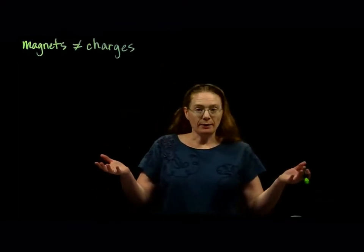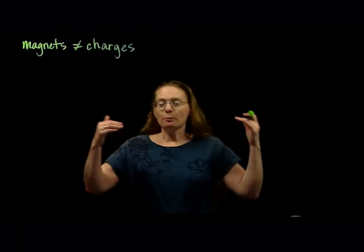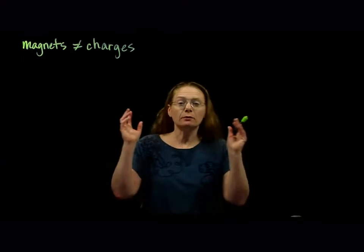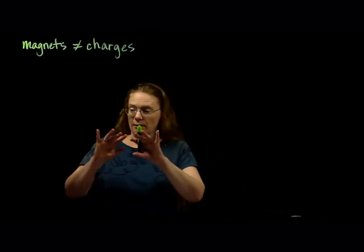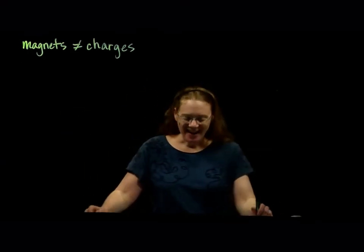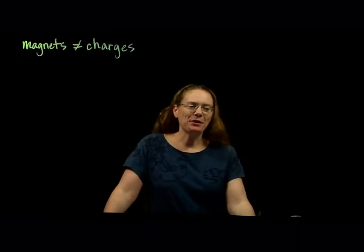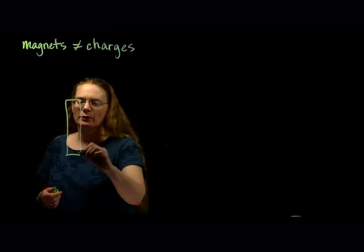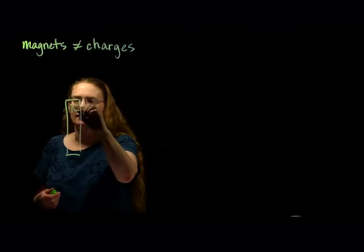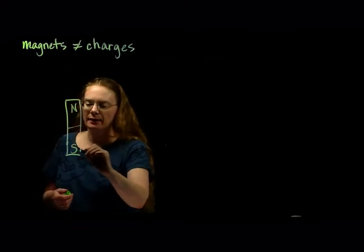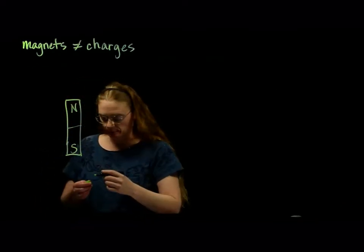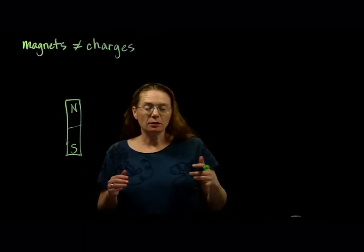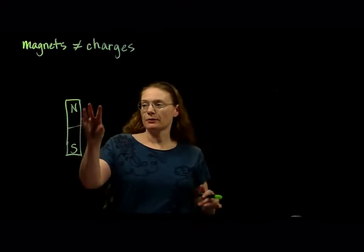You know that magnets have a north and a south pole. North and north will repel, north and south will attract. And if we were to take a standard bar magnet, where we just have a bar with a north pole and a south pole, we can talk about the magnetic field around this magnet.